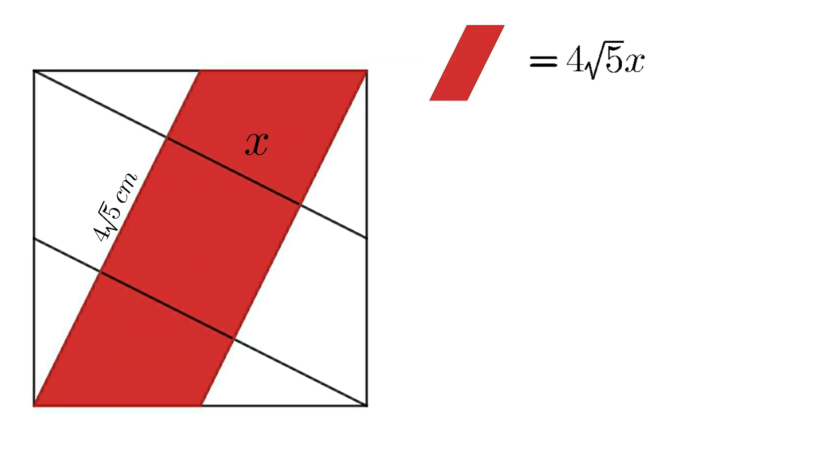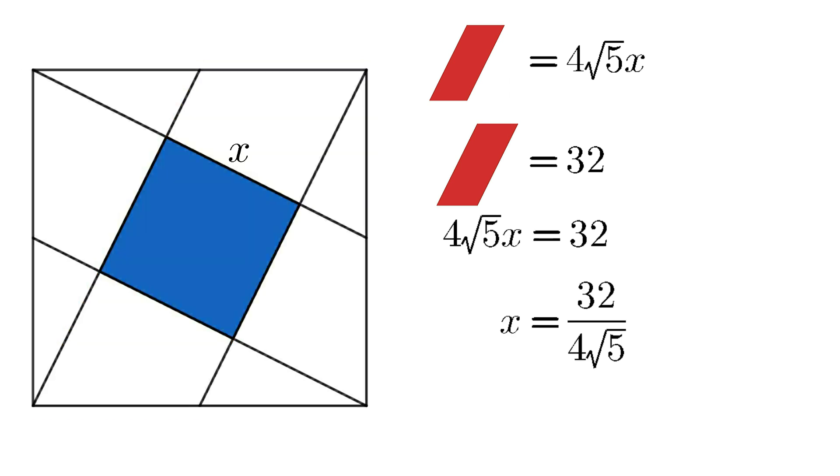So area of parallelogram equals 4 root 5 times x. We know that area of parallelogram equals 32. That is, 4 root 5 times x equals 32. So x equals 32 divided by 4 root 5, which is equal to 8 divided by root 5.